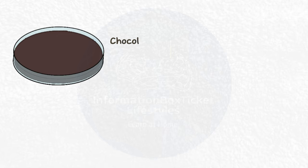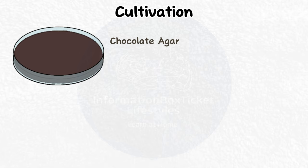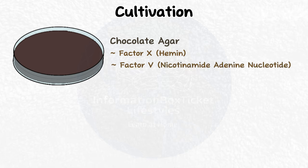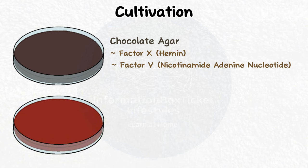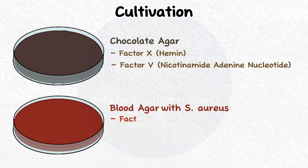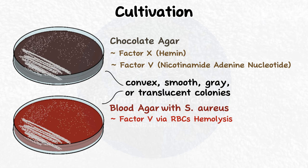Chocolate agar may be used to cultivate Haemophilus influenzae because it includes critical nutrients the bacteria requires to flourish, such as factor X, also known as hemin, and factor V, also known as nicotinamide adenine dinucleotide. Another method is to cultivate it with Staphylococcus aureus colonies on blood agar, which supplies factor V through red blood cell hemolysis. On both blood agar and chocolate agar, Haemophilus influenzae forms convex, smooth, gray, or translucent colonies.